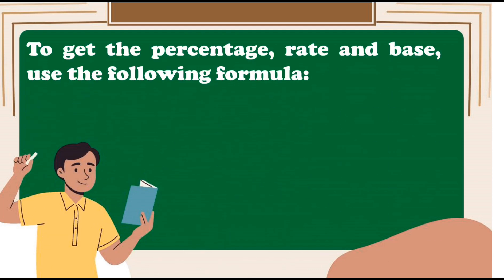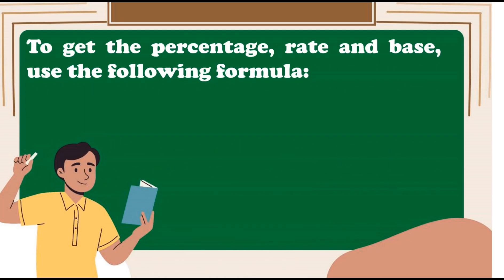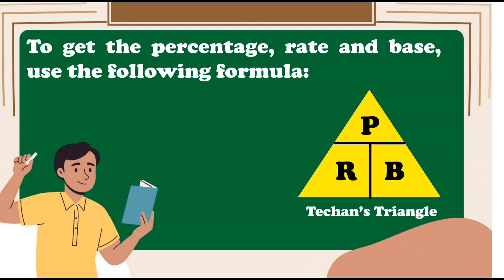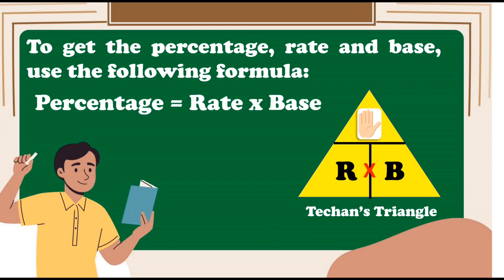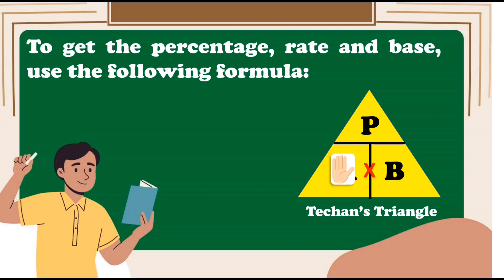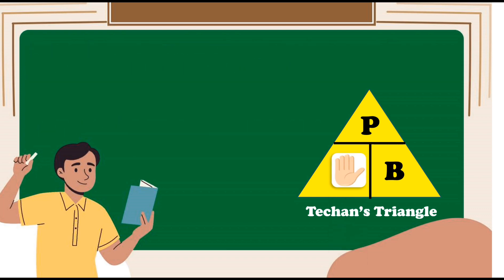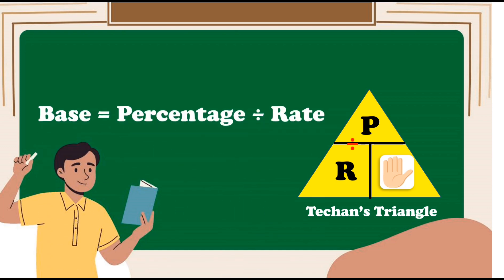Now, for us to get the percentage, rate, and base in a problem, let us use the following formulas. To easily remember the formulas, we will use the Tecans triangle. If we are looking for the percentage, cover the letter P, which gives us R times B. The formula is: Percentage is equal to rate times base. If the missing term is the rate, simply cover the letter R — that gives us P divided by B. The formula is: Rate is equal to percentage divided by base. And lastly, for the base, simply cover the letter B. The formula is P divided by R. We have: Base is equal to percentage divided by rate.